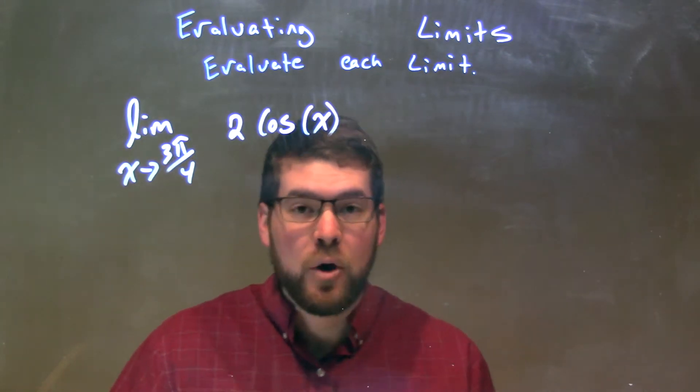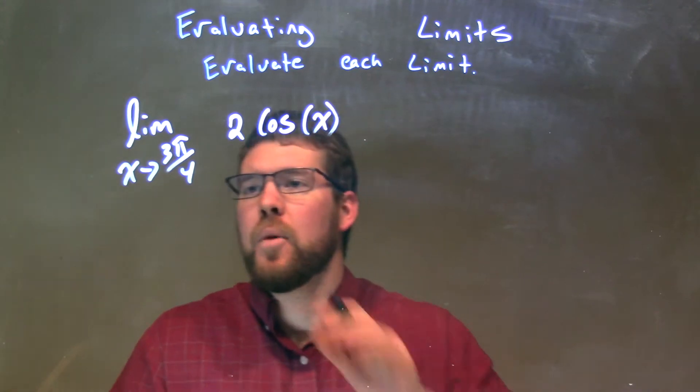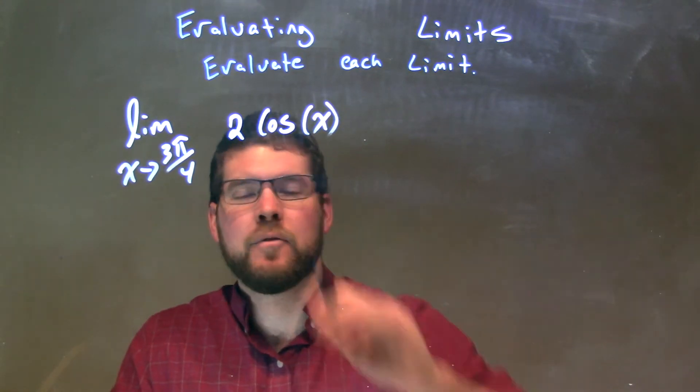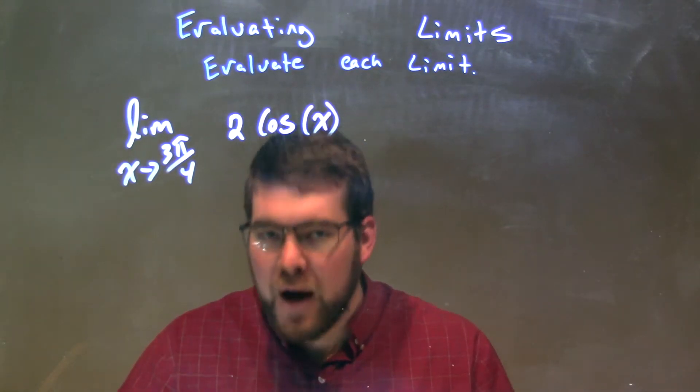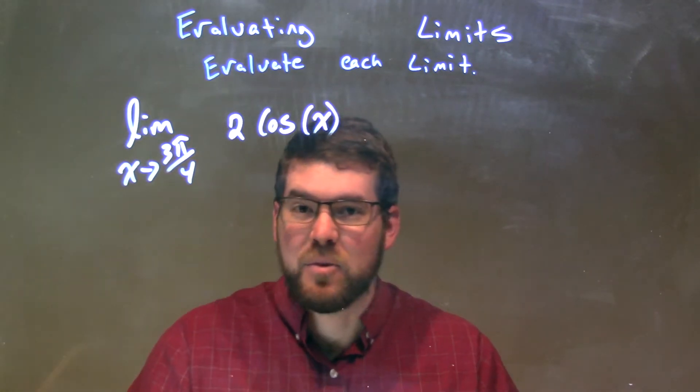Well, cosine of 2 cosine of x—cosine is a trig function. We can plug directly our limit in for that value x, provided that limit is in our domain, which cosine exists everywhere.